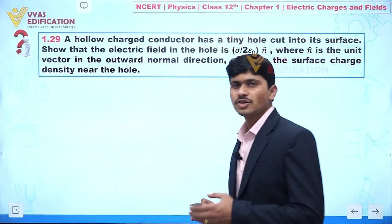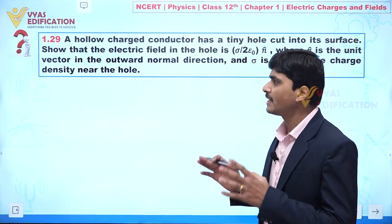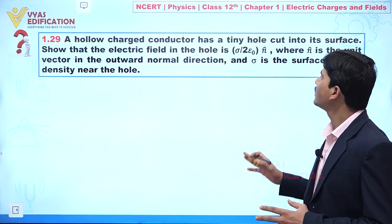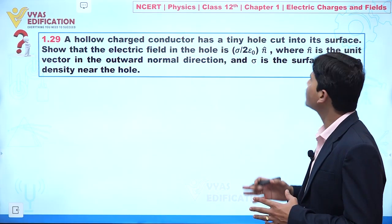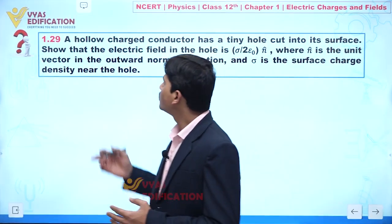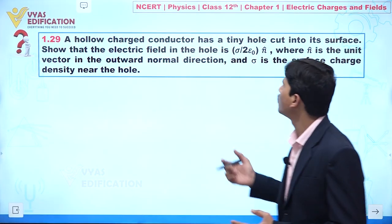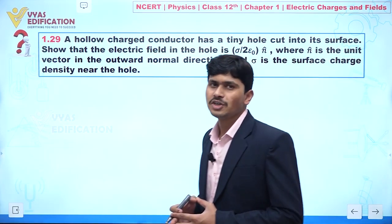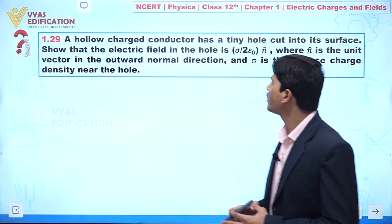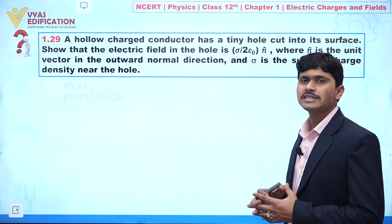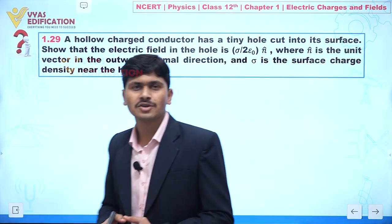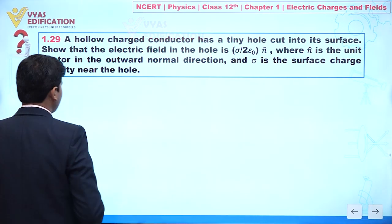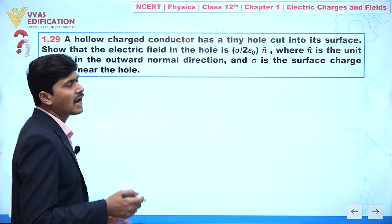We are going to discuss question number 1.29. In this question it is given: a hollow charged conductor has a tiny hole cut on its surface. Show that the electric field in that hole is σ/(2ε₀) n̂, where n̂ is the unit vector in the outward normal direction and σ is the surface charge density near the hole.